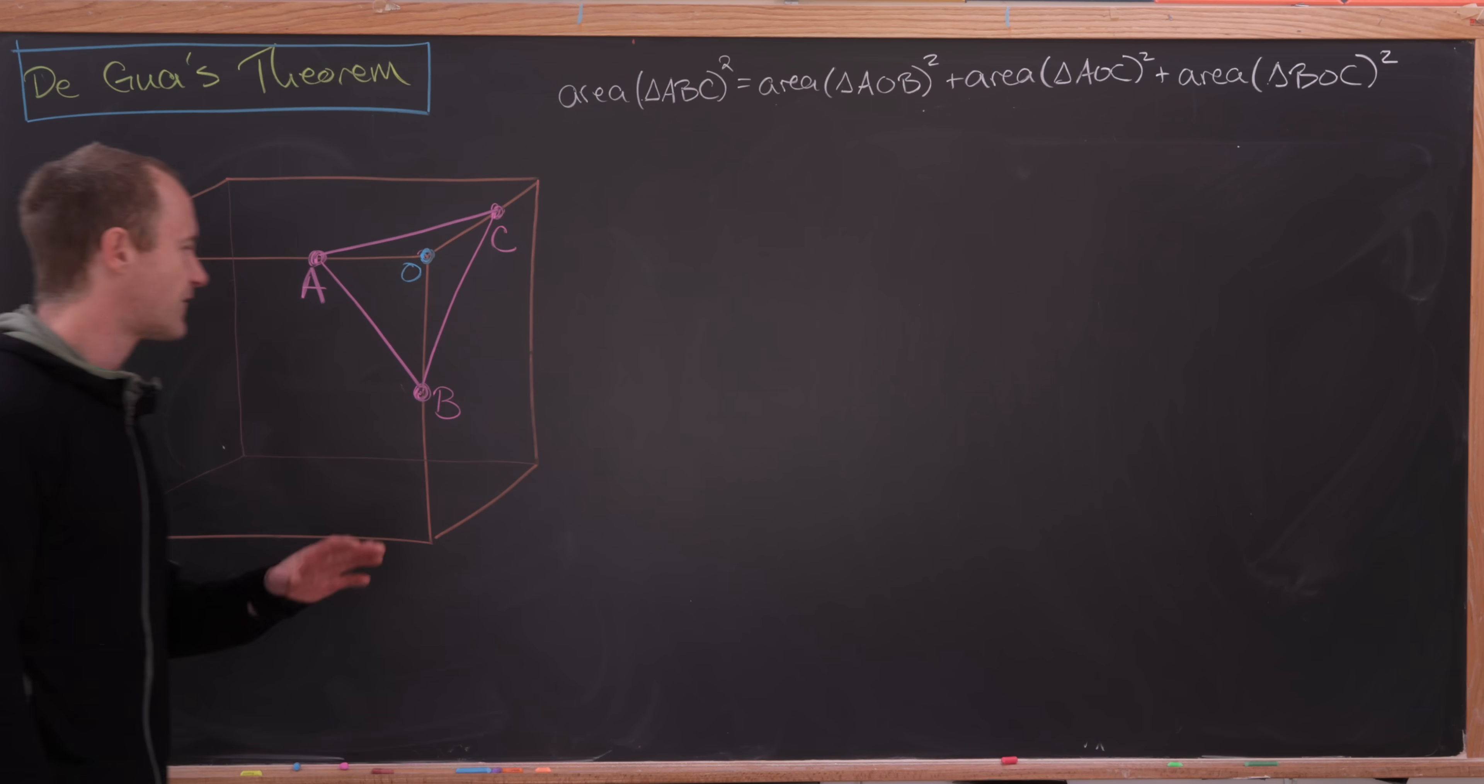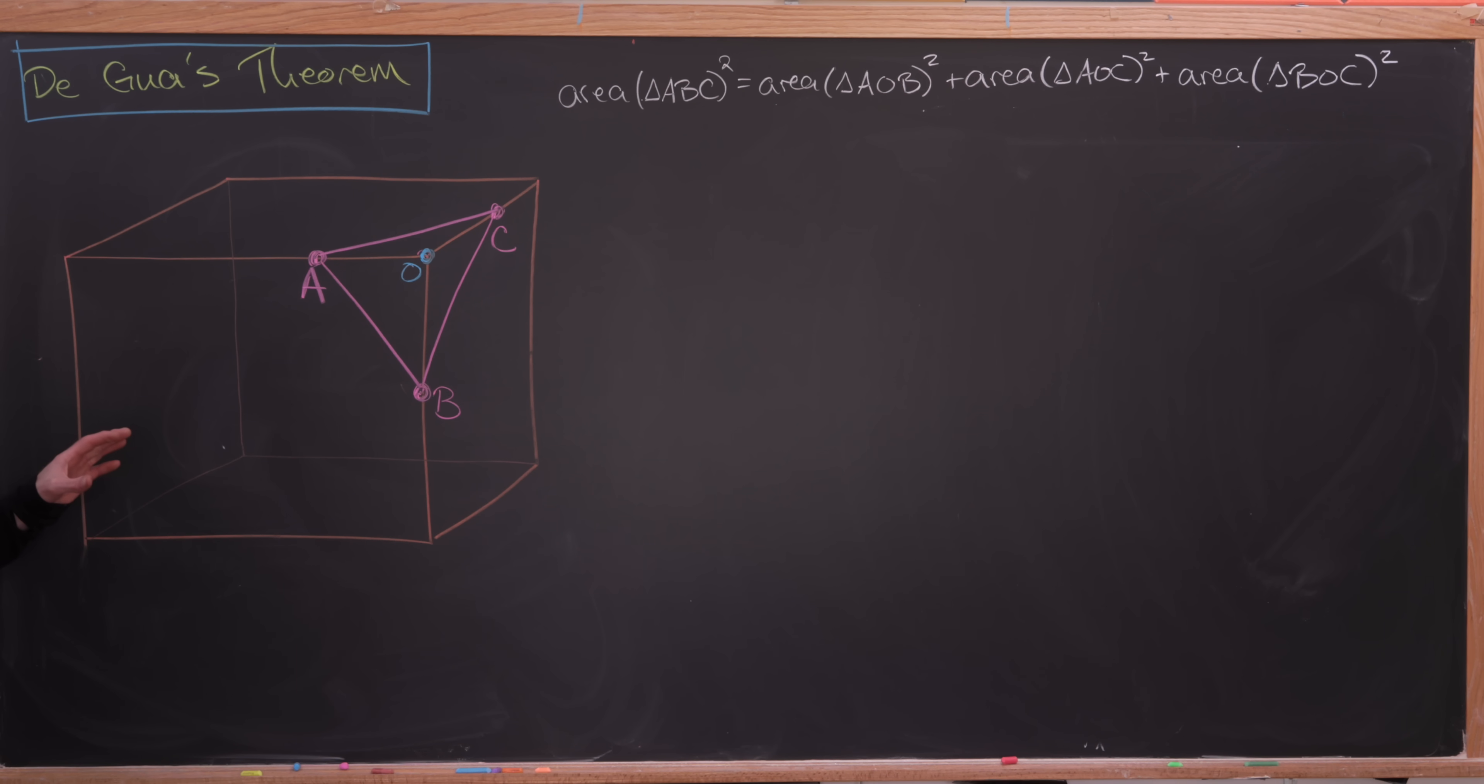So let's first look at the triangles whose area is easy to calculate. And that is the triangles on the sides of the box, and that's because they are all right triangles. So calculating their height, it just jumps right out at you. You don't have to do anything.